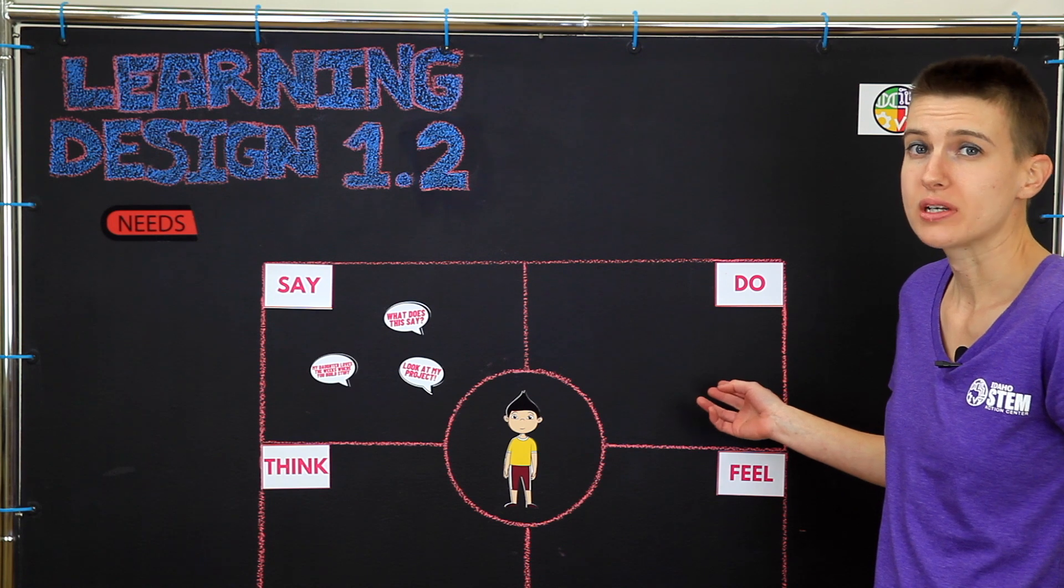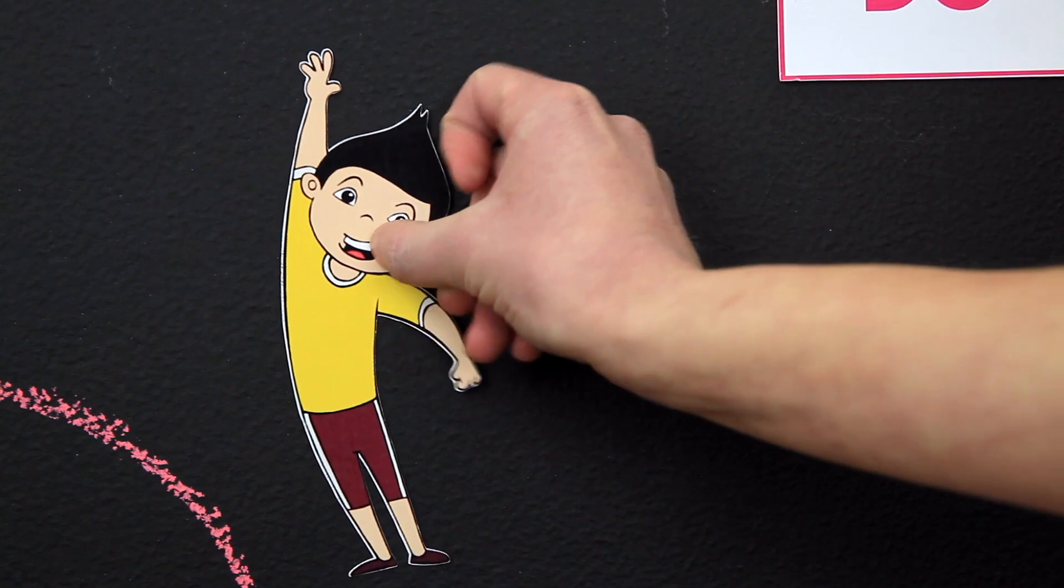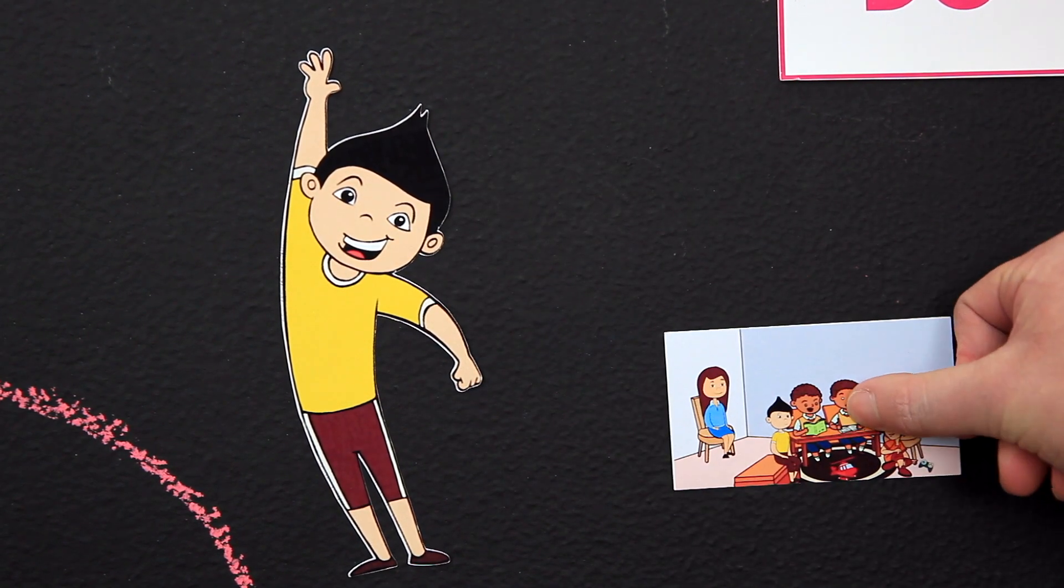The second quadrant is for things we notice our learners do. For example, moving around a lot while they work, or choosing to sit near a wall, away from other kids.